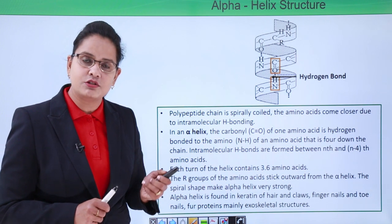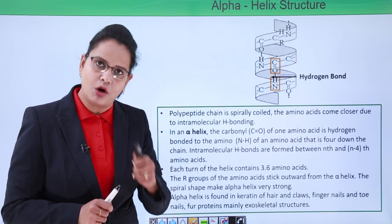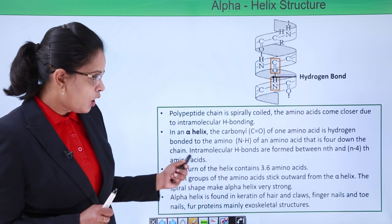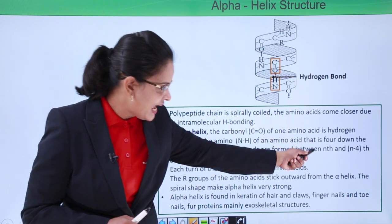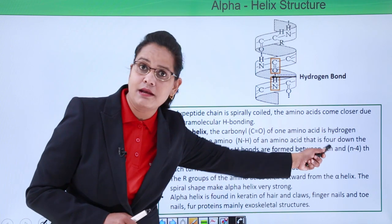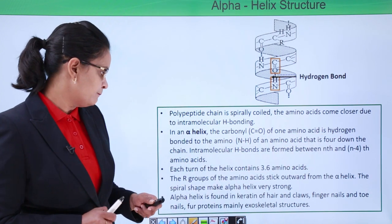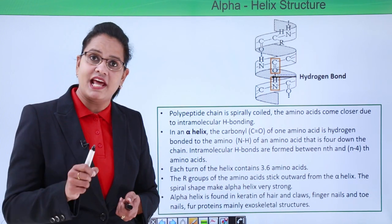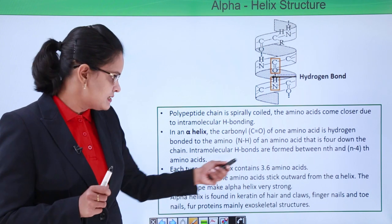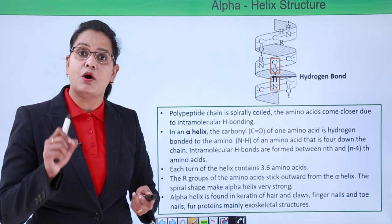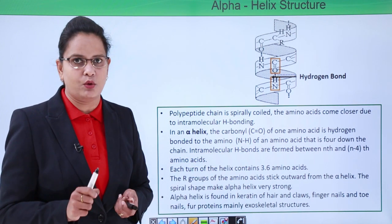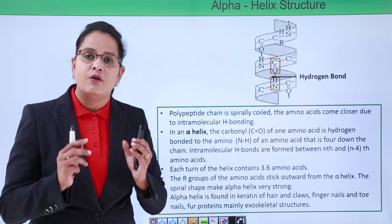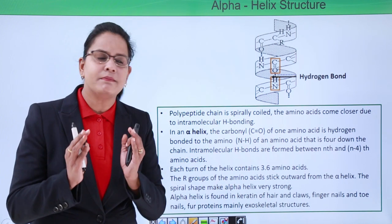Therefore it is known as intramolecular hydrogen bonding — the bonding is between the nth and the n-minus-fourth amino acid. Each turn of the helix contains around 3.6 amino acids.